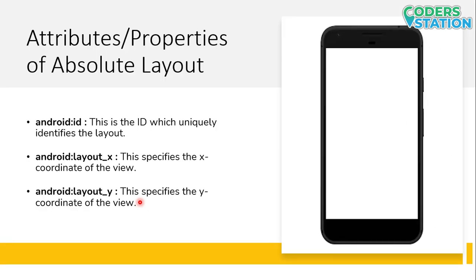Then we will be seeing the important properties of an Absolute Layout. The first and most important thing is the ID. The ID is used to uniquely identify the particular layout when we want to reference it in code. The background coding can be done with the help of an ID. Next, the most important properties are layout_X and layout_Y.